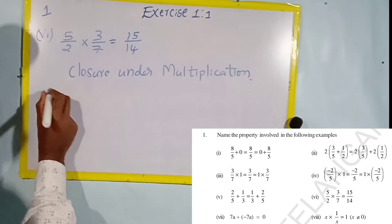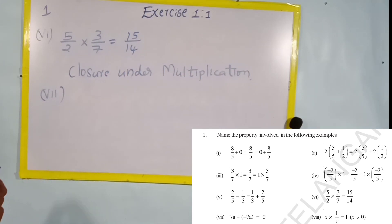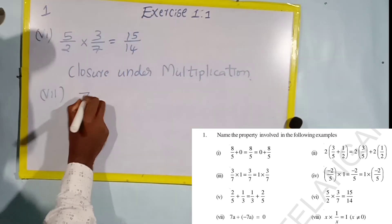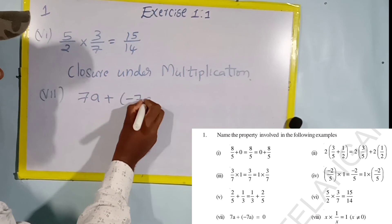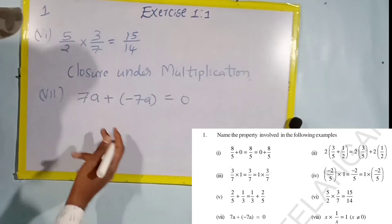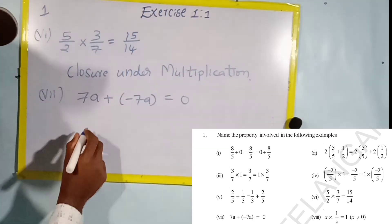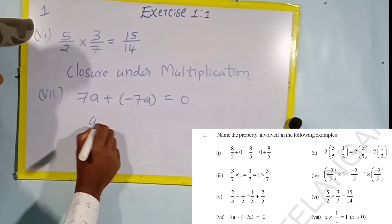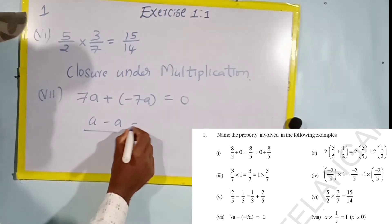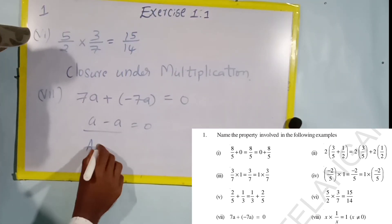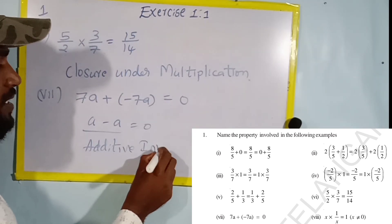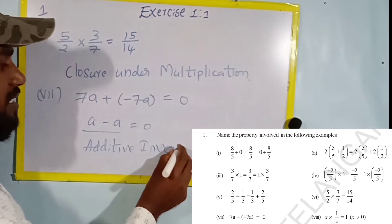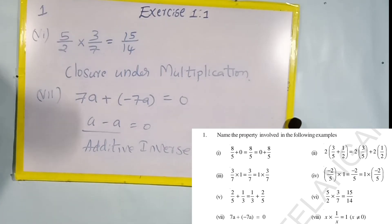Seventh one: seven a plus minus seven a equals zero. As I already told you, the additive inverse of a is minus a, and a plus minus a equals zero. So this is the additive inverse property.